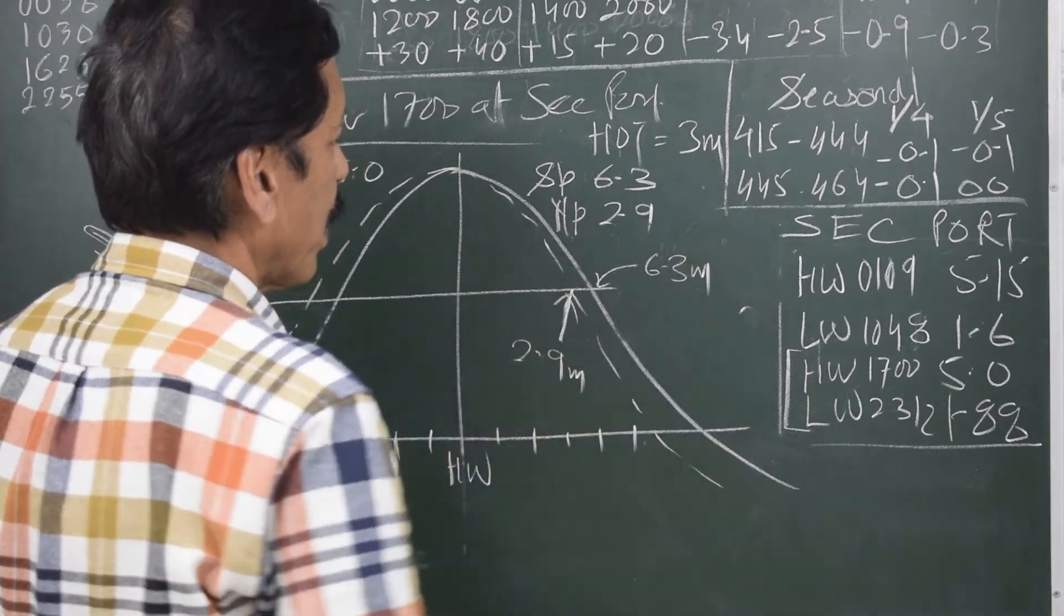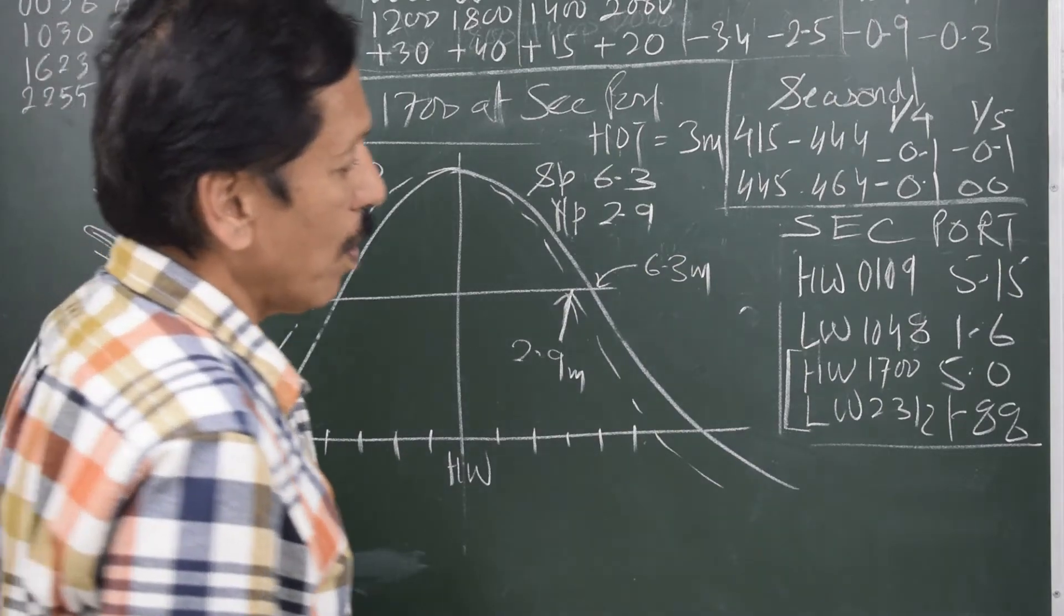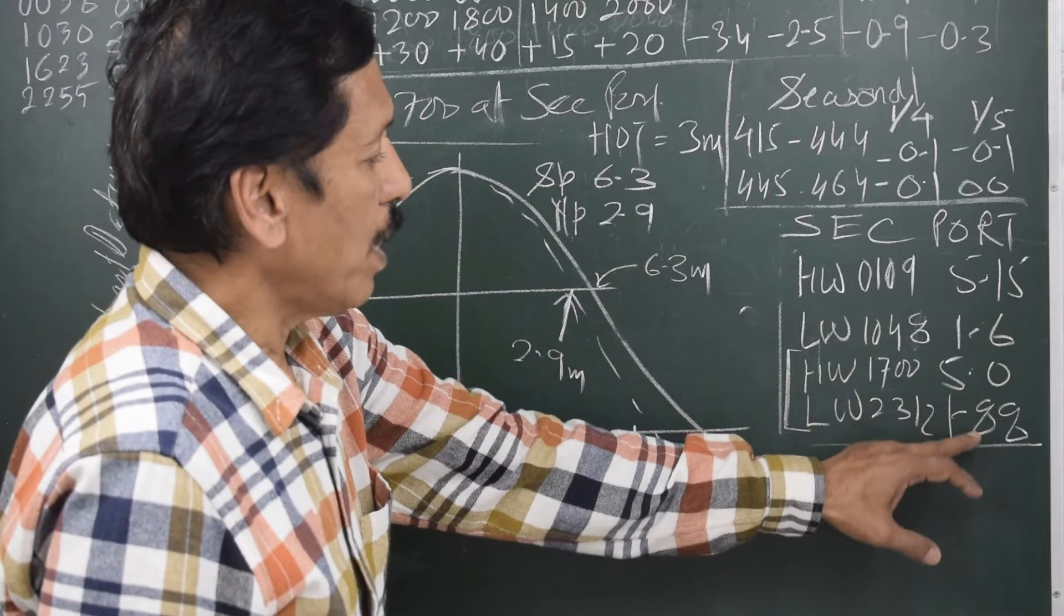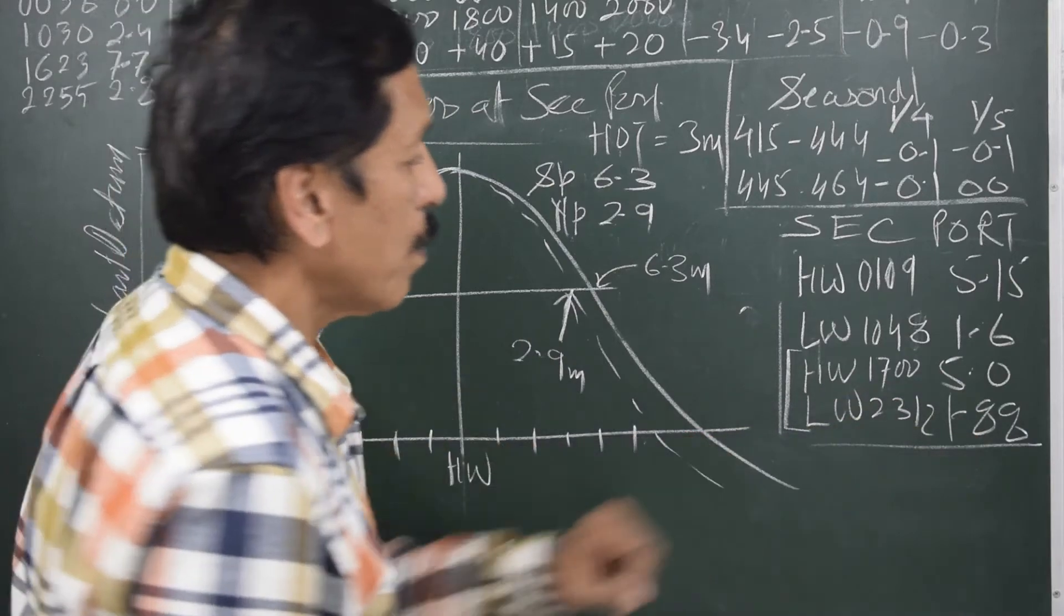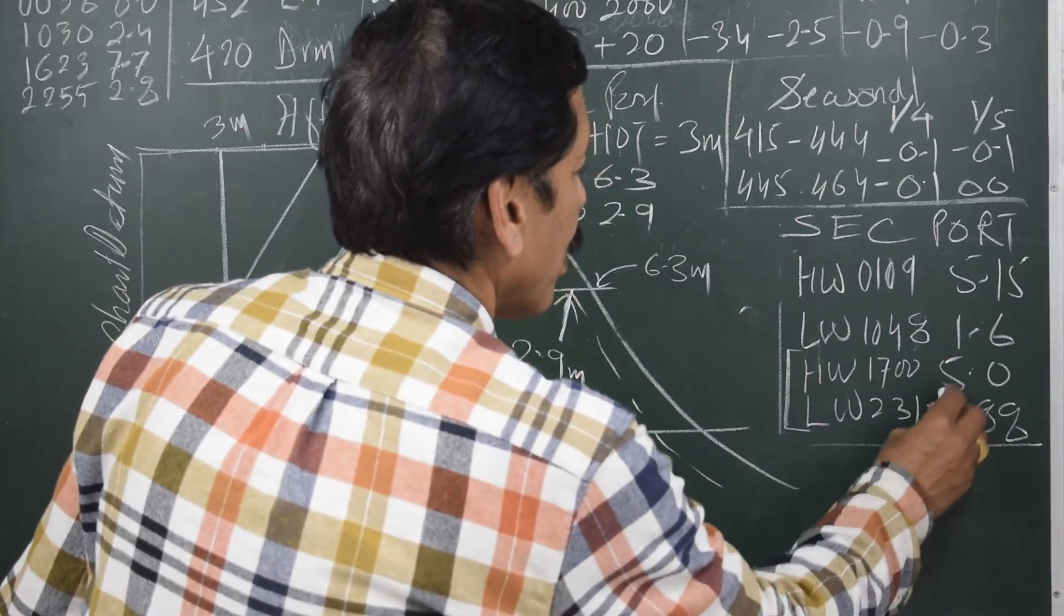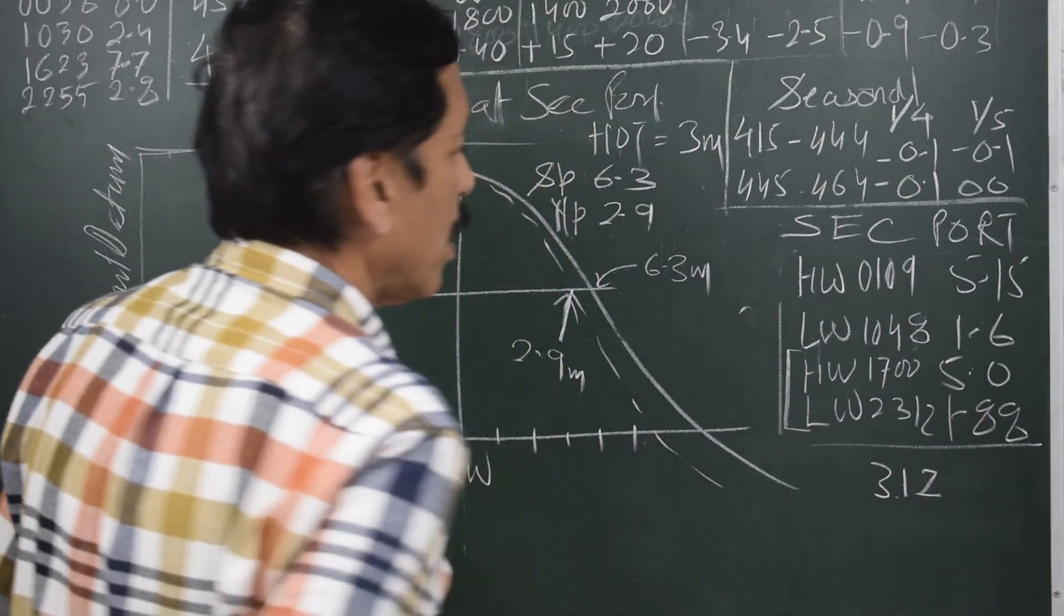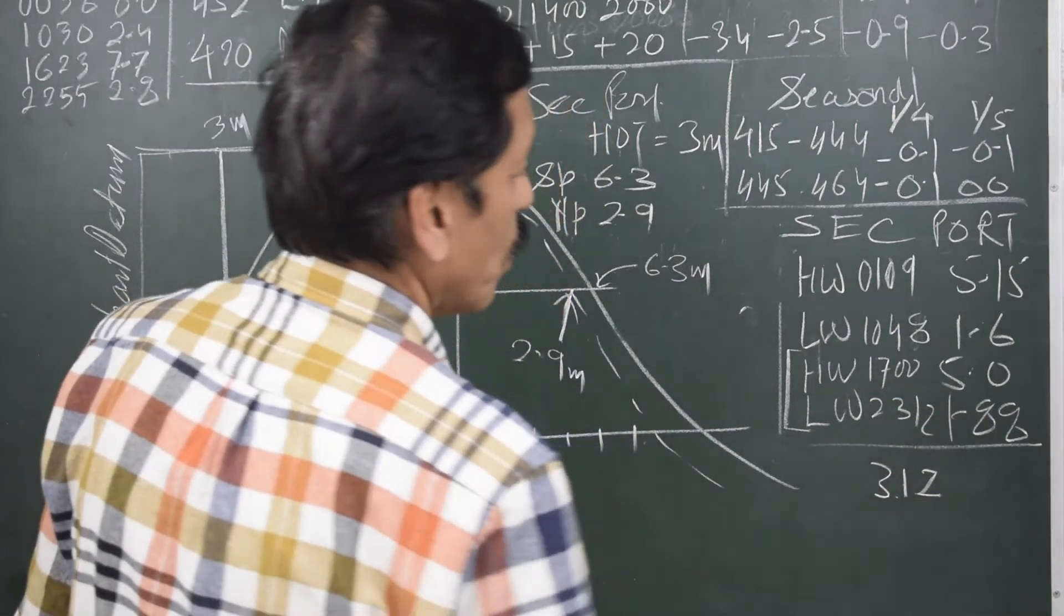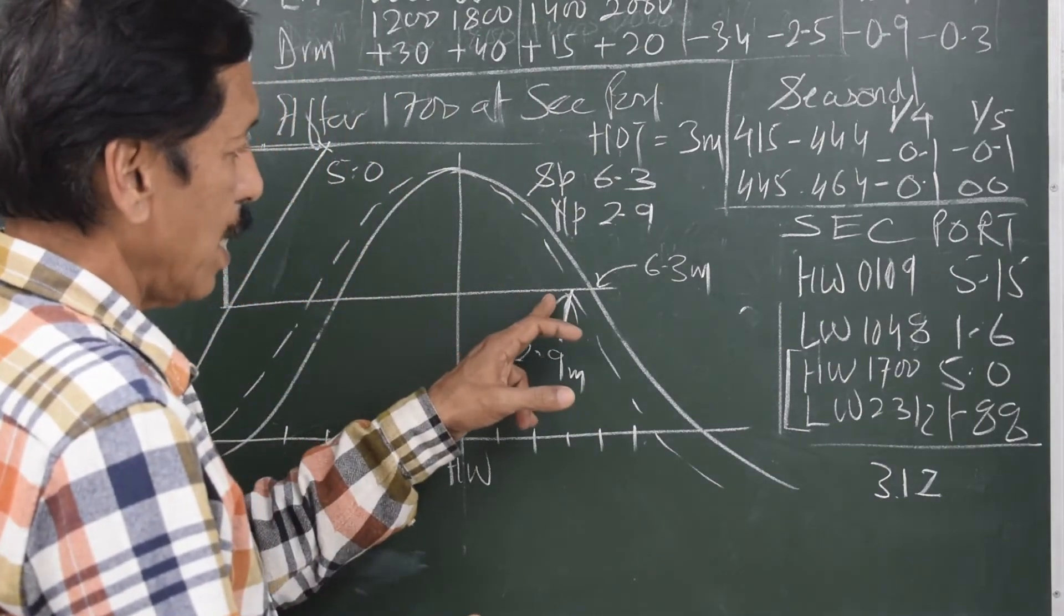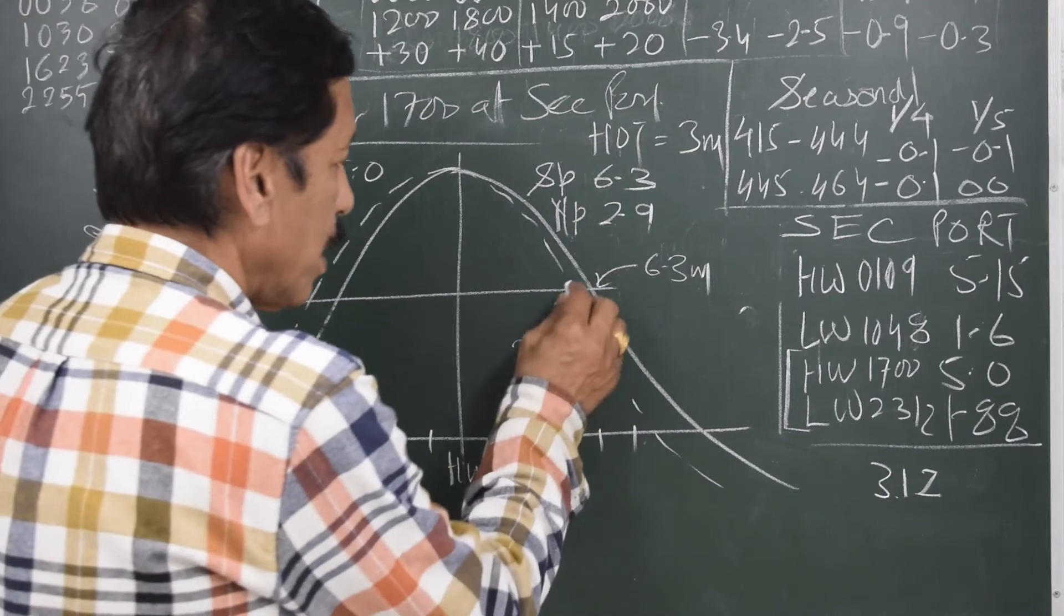And I'm looking for a range. Let us see what range I am looking for. High water 1712, low water 2312. The range is 3.12. 3.12 is the range. Now 2.9 is here, 6.3 is here, 3.12 would be something like this.